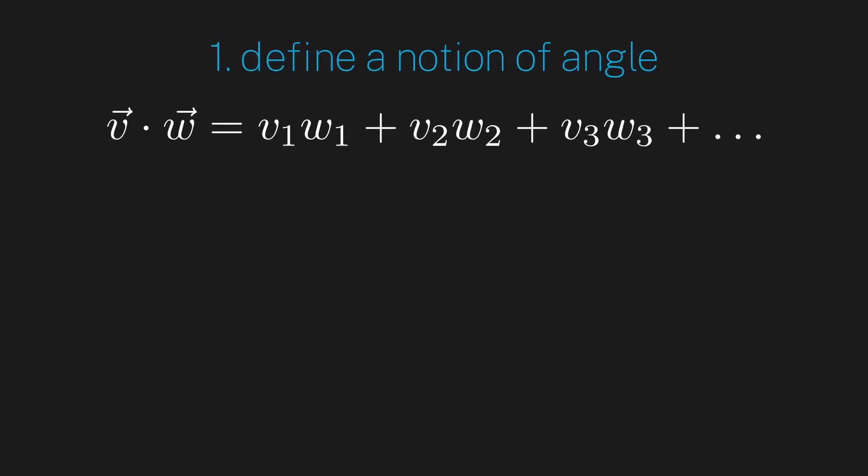First, the dot product allows us to define a notion of angle and orthogonality, aka being perpendicular. Remember that we have the following equality for the dot product, which essentially tells us that the dot product is a measure of the angle between vectors. Importantly, if two vectors are orthogonal, their dot product is zero.